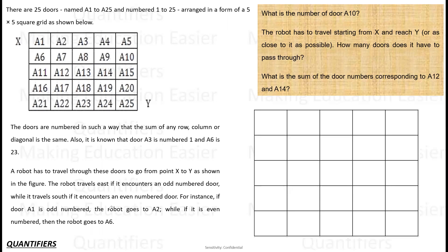A robot has to travel through these doors to go from point X to Y. The robot travels east if it encounters an odd number door, and travels south if it encounters an even number door.